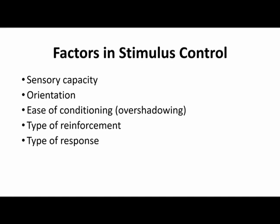In our last lecture, we started talking about some of the factors we should consider when looking at stimulus control. We talked about sensory capacity and orientation — whether the species used in our experiment is physically capable of perceiving whatever is being shown or played for them, and that they're actually facing the correct direction to see the stimuli. This included the example of having chickadees sit where they could actually hear the stimulus being presented.